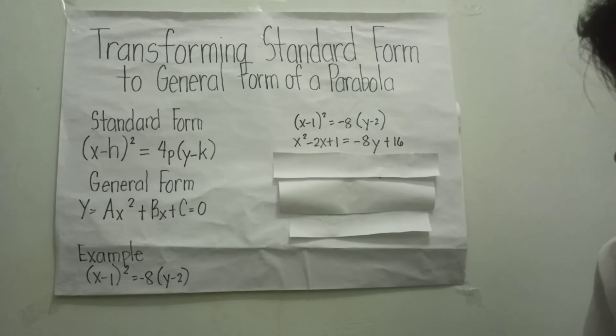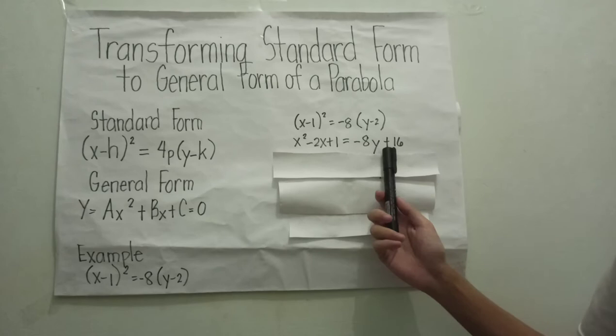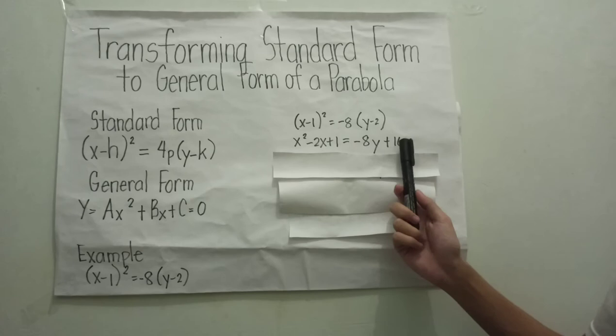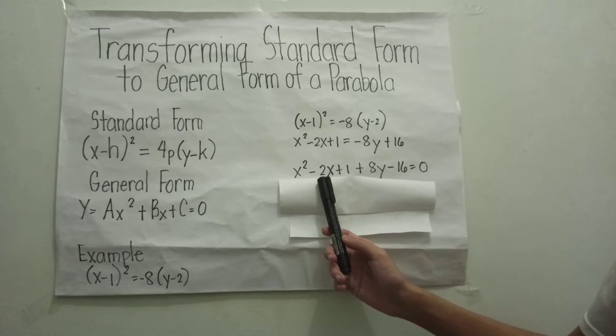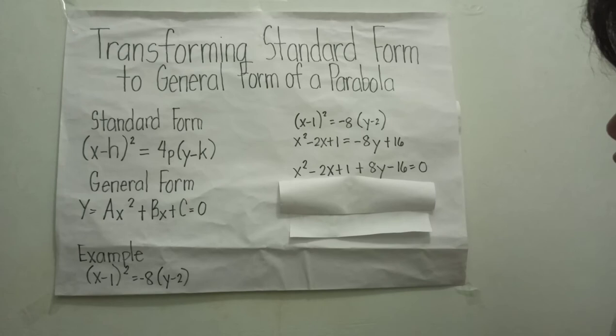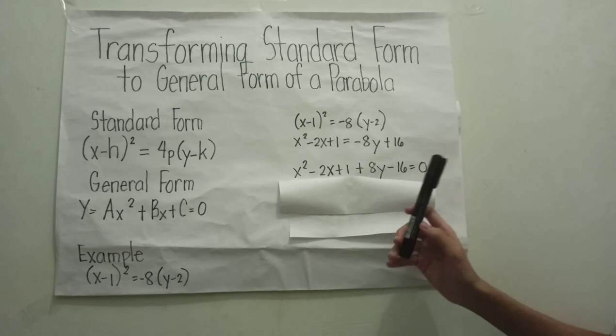Our next step is equating to zero. We move negative 8y plus 16 to the other side, so our equation will look like this: x squared minus 2x plus 1 plus 8y minus 16 equals zero. The negative 8y becomes positive 8y and the positive 16 becomes negative 16 since we moved them to the other side.